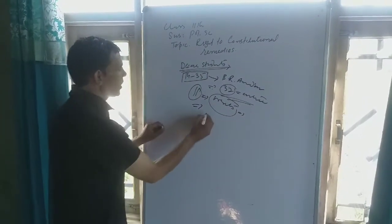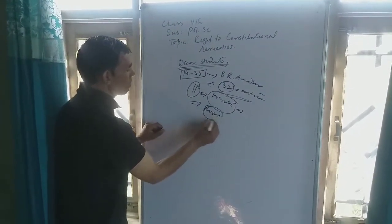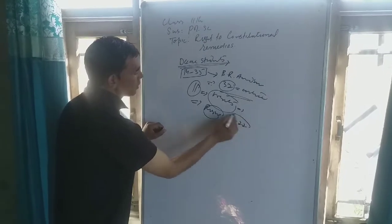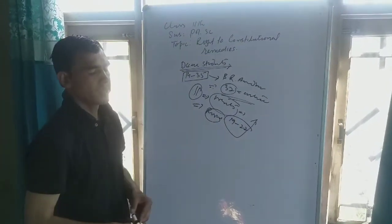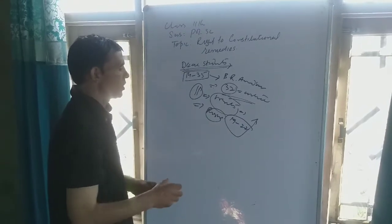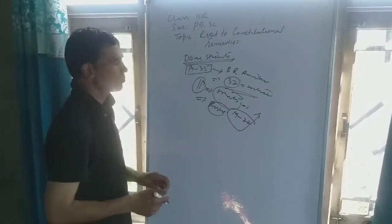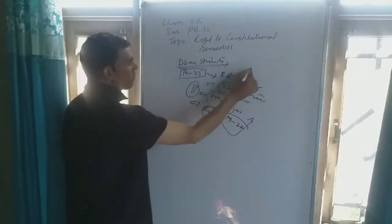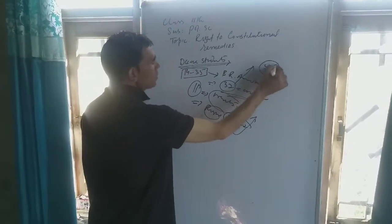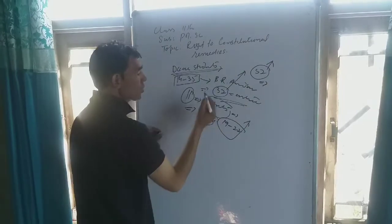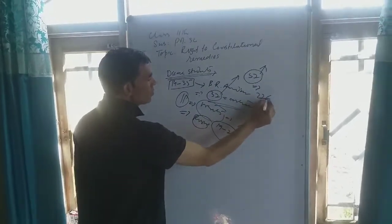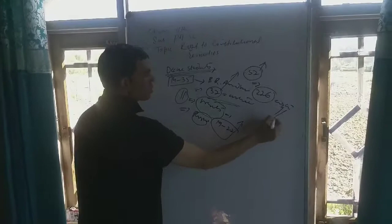For example, right to freedom, we are enjoying from article 19 to 22. If these rights are violated by any agency, whether it is a government agency or a person, you can move to the court, move to the apex court using article 32 of the Indian Constitution and also can move to the High Court using article 226 of the Indian Constitution.